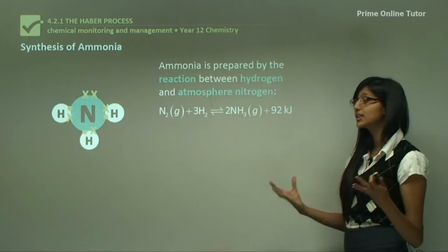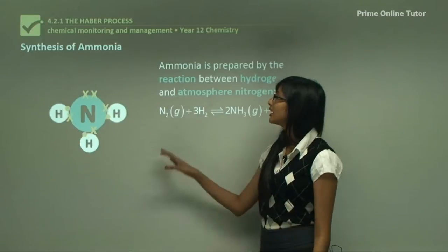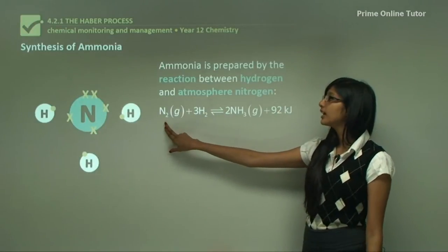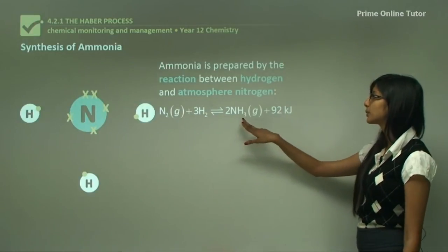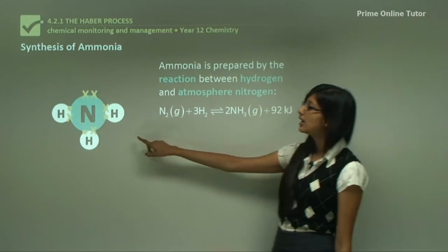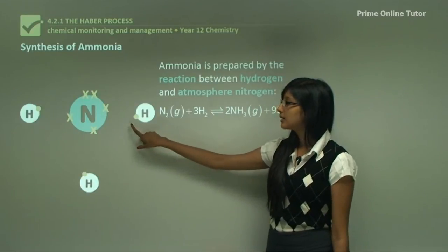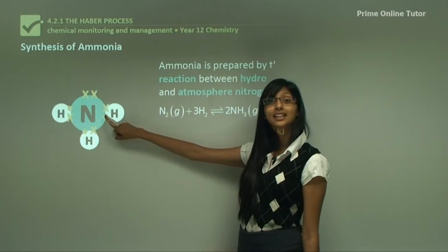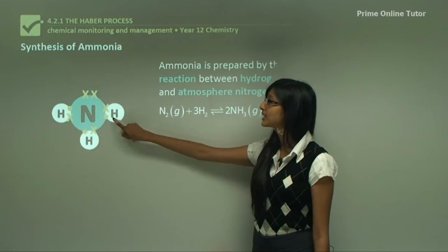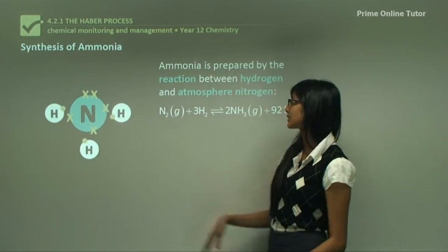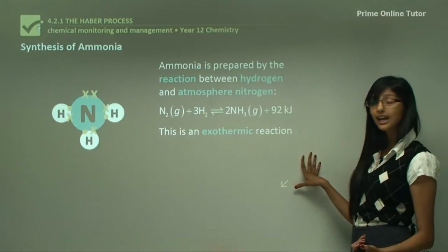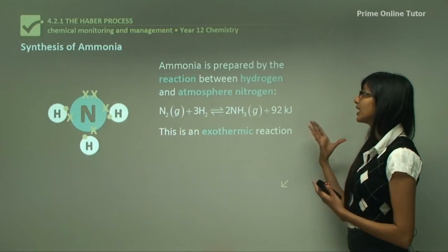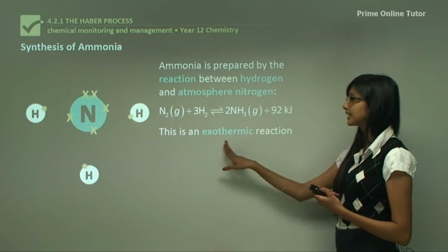Now let's look at how the ammonia molecule is actually formed. Ammonia is prepared by the reaction between hydrogen and atmospheric nitrogen. In this equation, nitrogen reacts with three molecules of hydrogen to produce two molecules of ammonia. In this animation, the hydrogens share electrons with nitrogen — the electrons of nitrogen are represented as X and electrons of hydrogen as dots. A covalent bond forms between the two molecules. The reaction is also exothermic because 92 kilojoules of energy is produced as a product, so heat is released, hence it's an exothermic reaction.